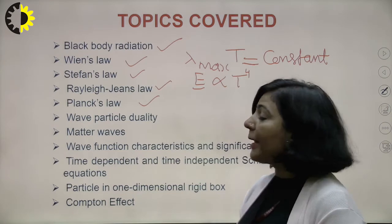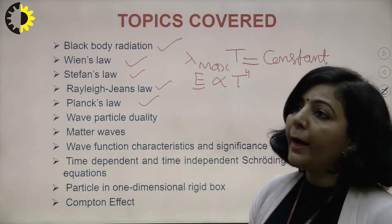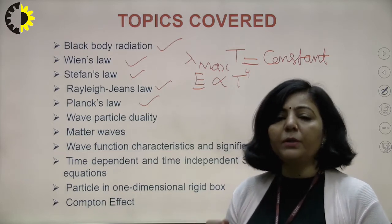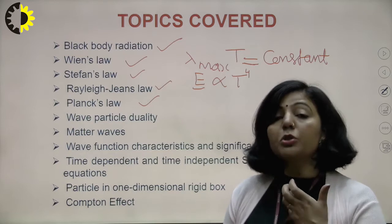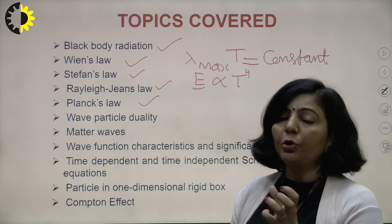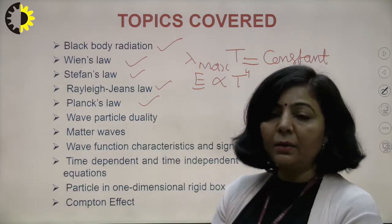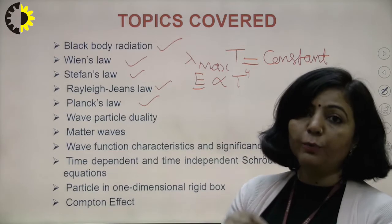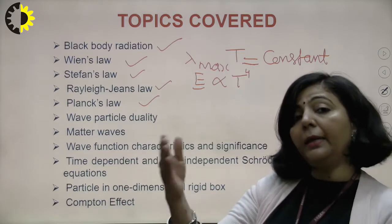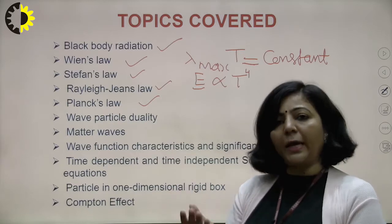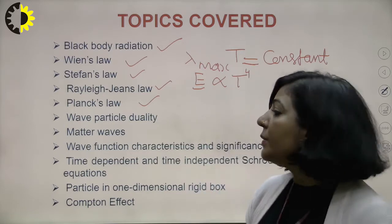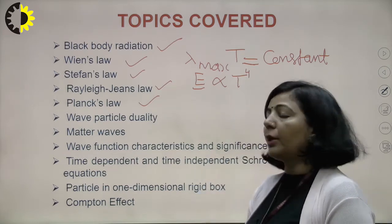Because of these drawbacks — no explanation for the entire black body radiation spectrum from classical theory — Max Planck proposed a new theory known as Planck's quantum theory. According to this theory, energy cannot be emitted or absorbed continuously; energy is emitted or absorbed in the form of discrete packets or quanta, each of energy hν. This is the main concept and base of Planck's quantum theory.